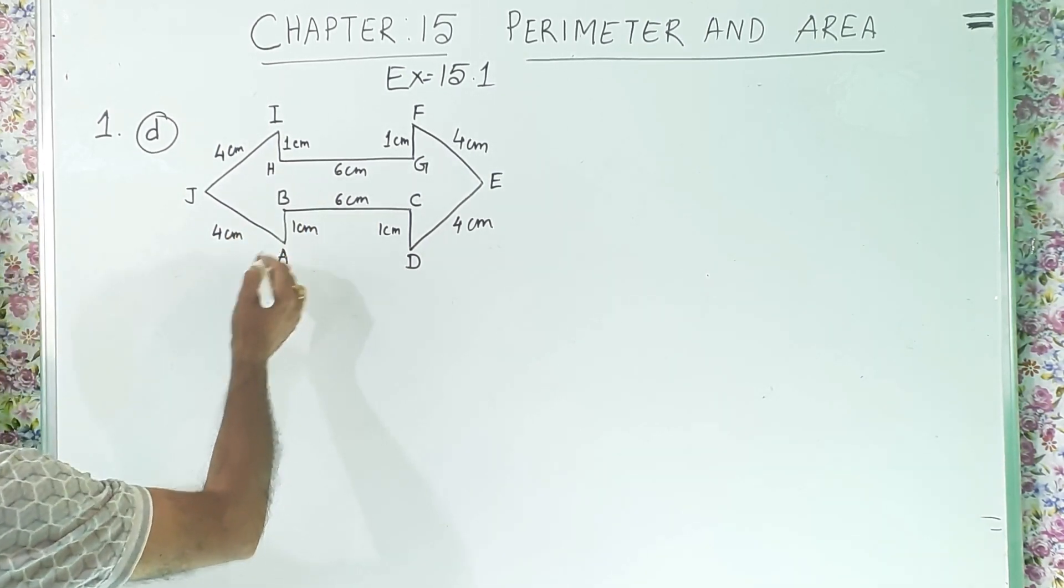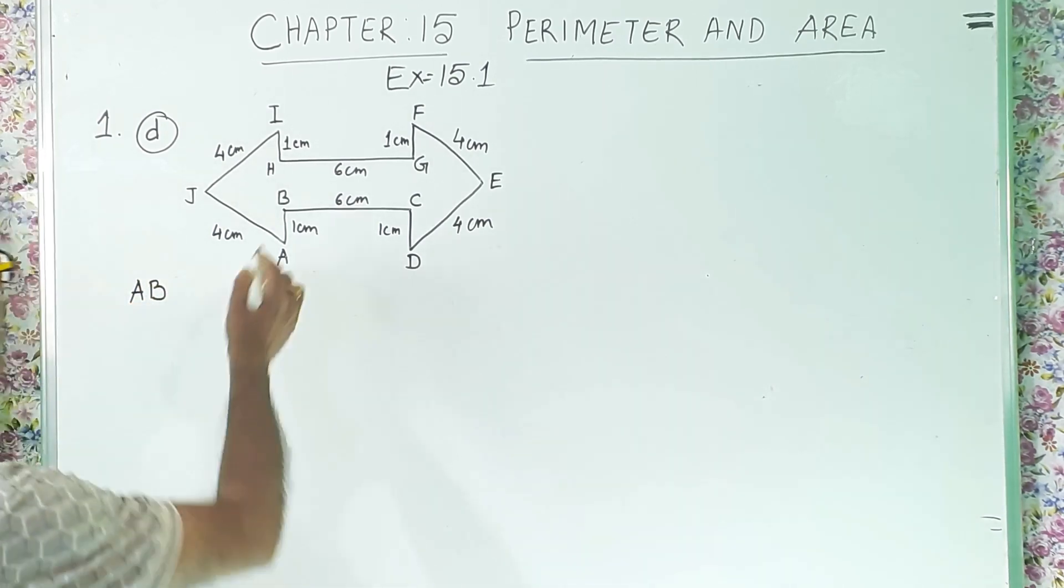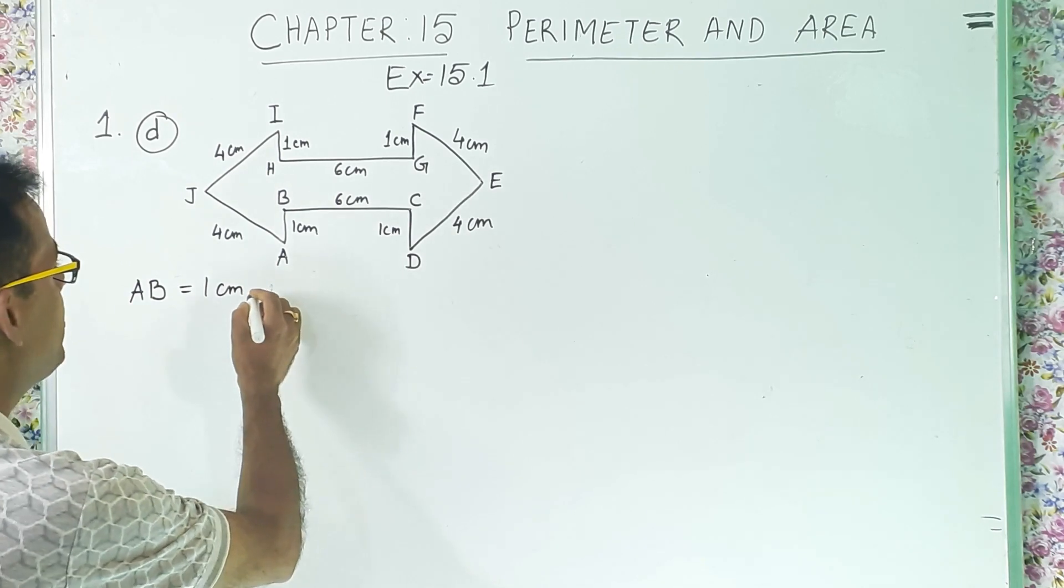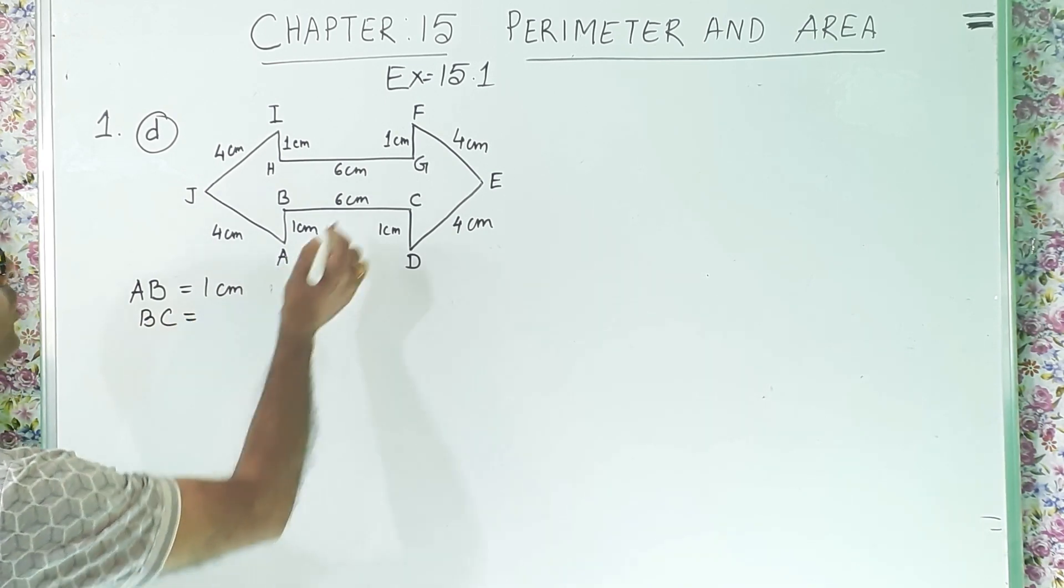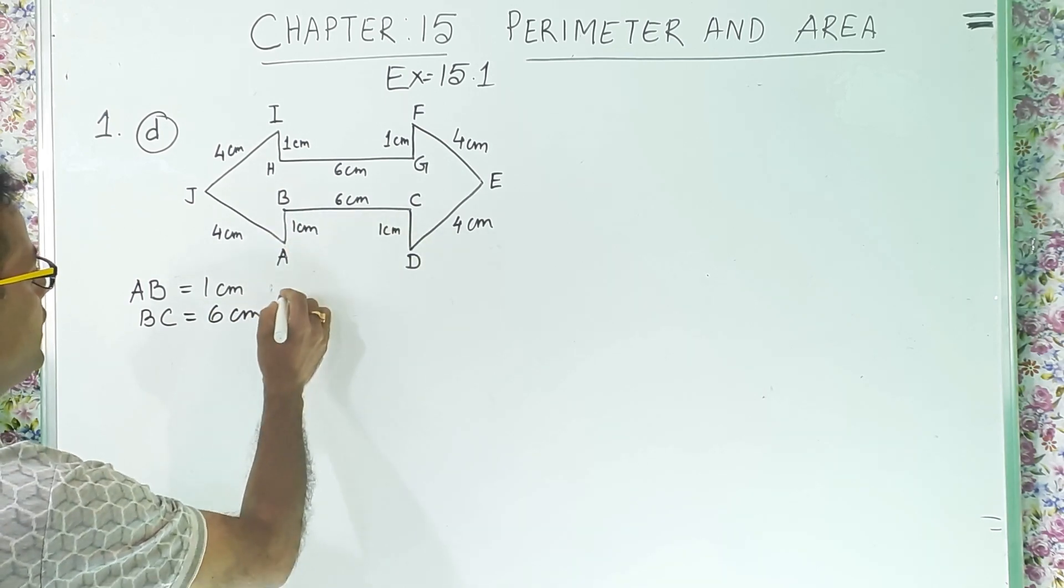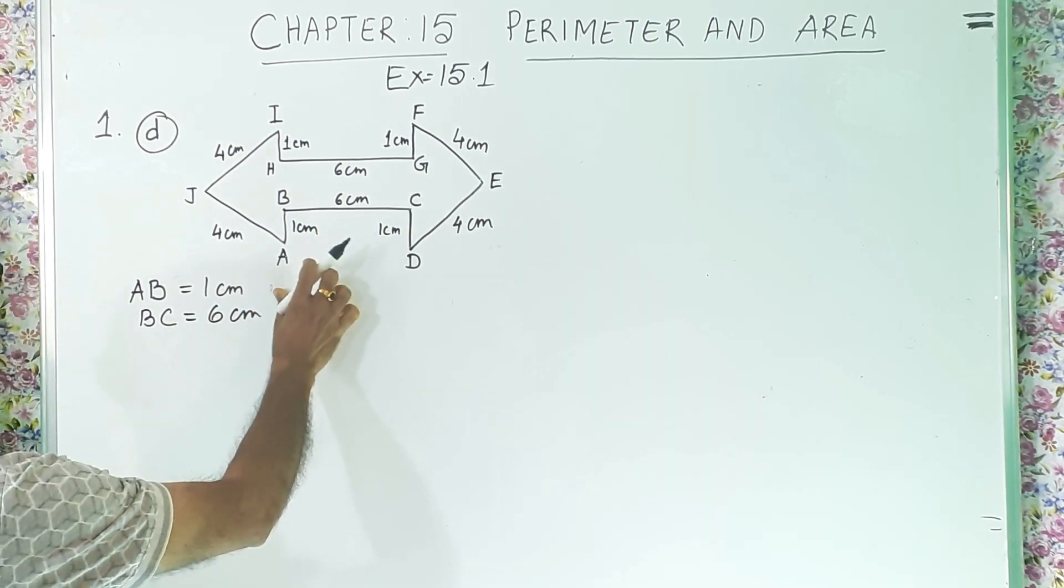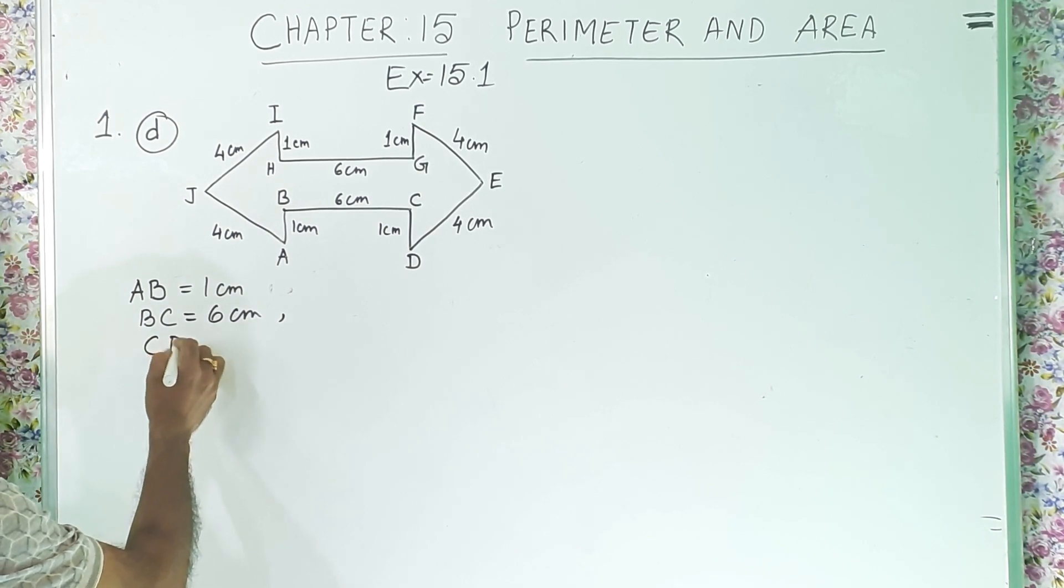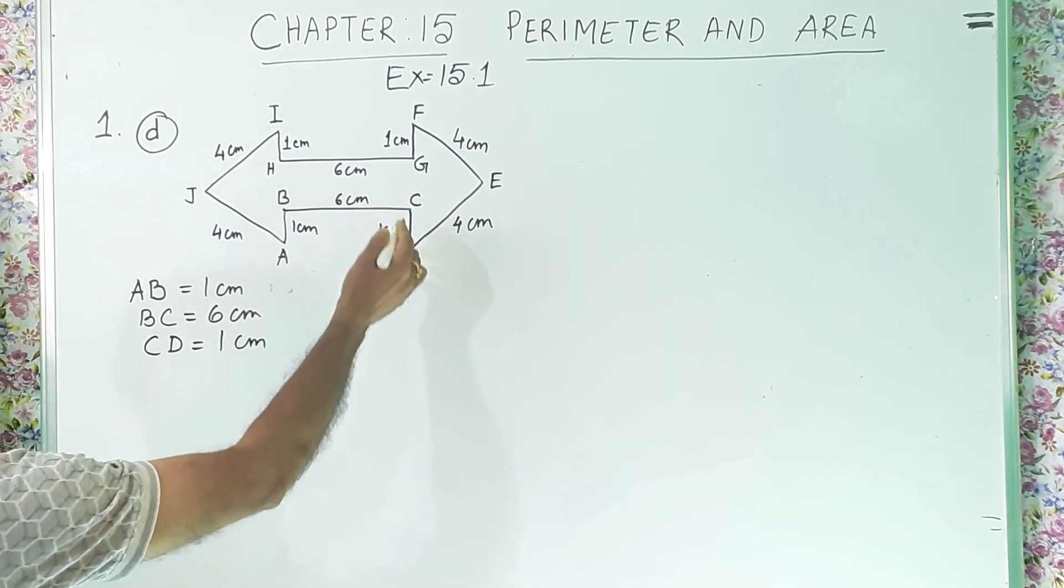Now, we are going to find out the perimeter of this diagram. So, let's start. First of all, we will write the information. So, what is given? AB is 1 centimeter. Next, BC is 6 centimeter. After that, CD is 1 centimeter. Then after that, next information is DE, which is 4 centimeter. After that, EF is also 4 centimeter.